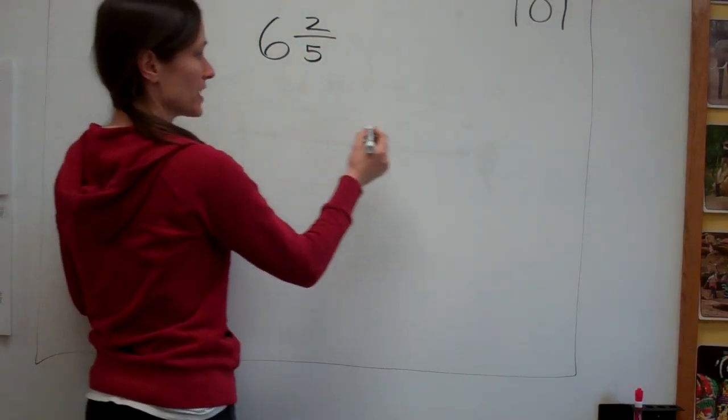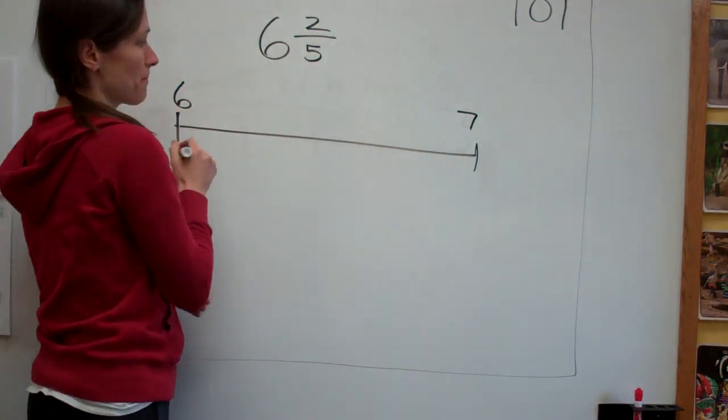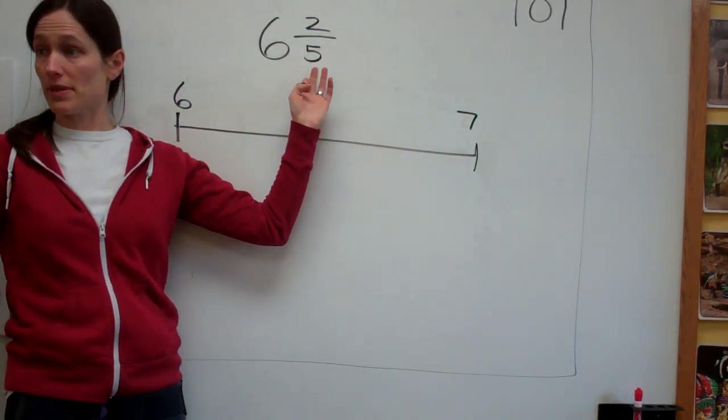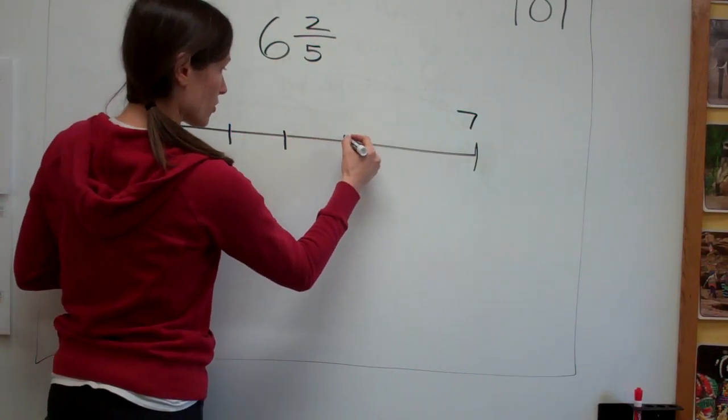What's it between? Six and seven. Six and seven. So watch this. I'm going to put a six and a seven. This time, how many pieces is it broken up into? Five. Five. Okay, so I'm going to draw one, two, three, four.